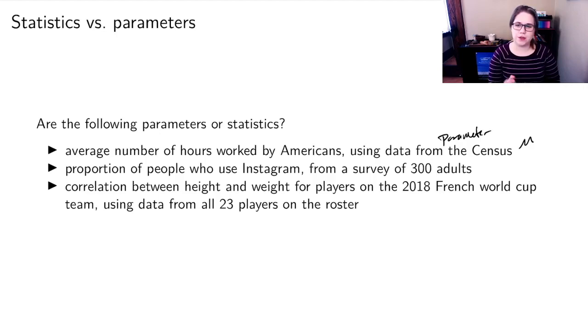And I'd like you to think about these next two examples, the proportion of people who use Instagram from a survey of 300 adults, and the correlation between height and weight for players on the 2018 French World Cup team, using data from all 23 players on the roster. Think about whether those are parameters or statistics, and maybe also think about the notation that you would use for each of those quantities. And we'll talk about that during synchronous class.